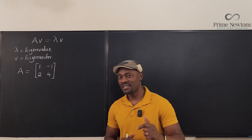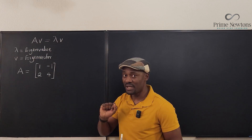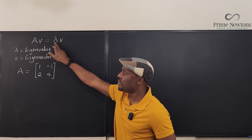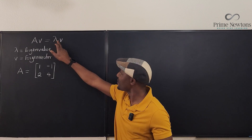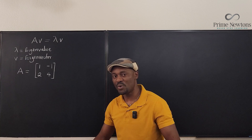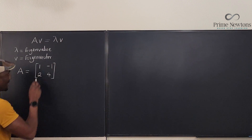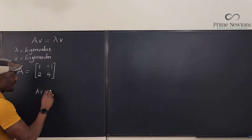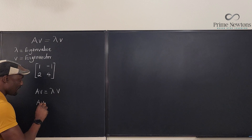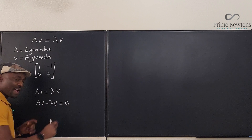Let's start by looking at this equation: Av = λv. Here, A is a matrix, v is a vector, and λ (lambda) is a scalar — just a number. We want to solve this equation. We say Av = λv, then move everything to one side: Av - λv = 0.